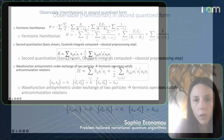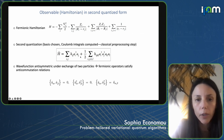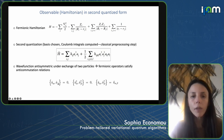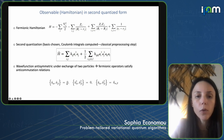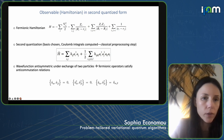One thing to note about this kind of Hamiltonian is that the type of operators appearing here are fermionic operators, which means that they obey anti-commutation relations. So when we transform from a Hamiltonian like this into qubits, we need to worry about the fact that the operators have to follow these relations.